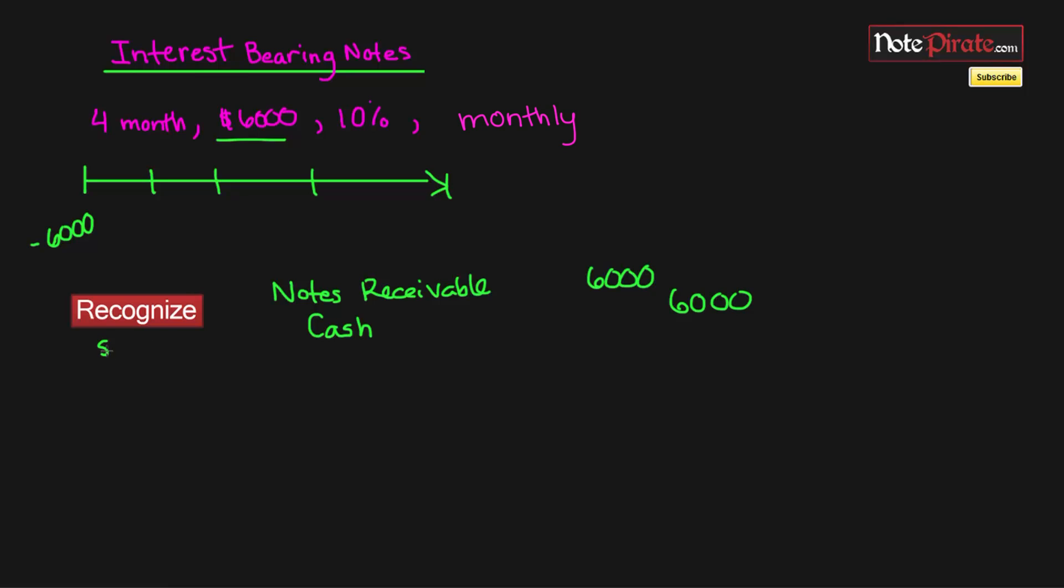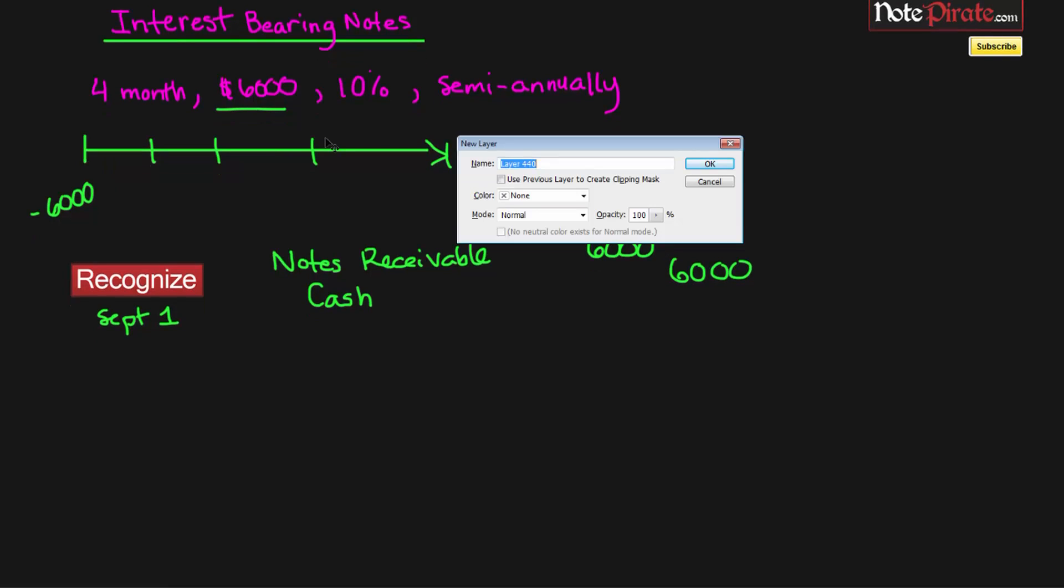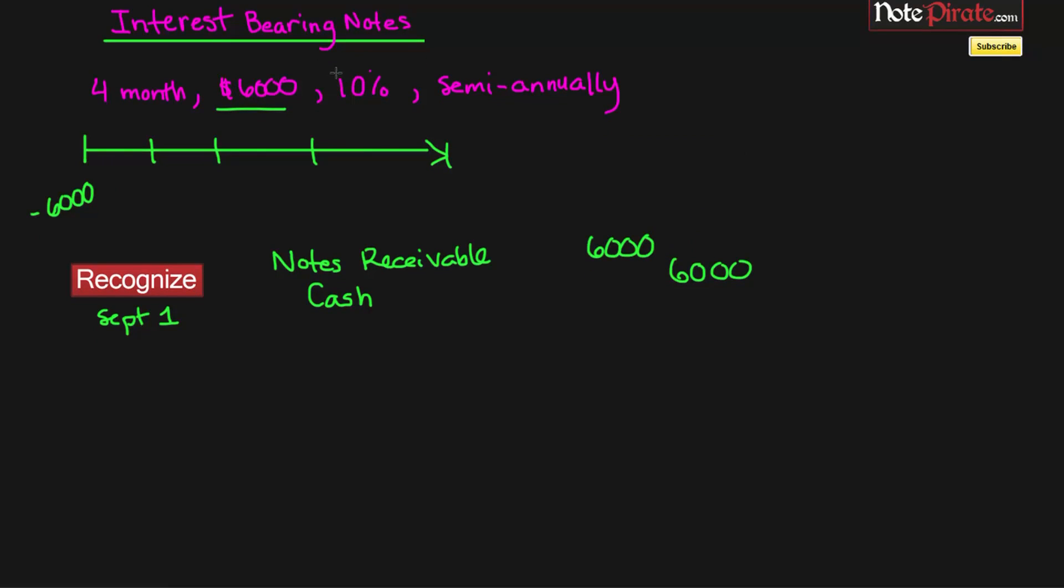The interest payments are the next part. We have a 10% rate. Now this is always an annual amount, so we're not receiving 10% each month. We need to figure out how much we're actually going to be earning.